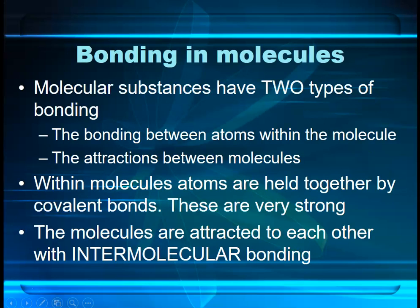It's important to think about what we mean when we talk about bonding. Molecules are quite special in that there are two types of bonding that happen within a molecule. First, there's the bonding between the atoms in the molecule. If you think of a molecule like water, there's bonding between the hydrogen and oxygen atoms — that's covalent bonding and it's very, very strong.